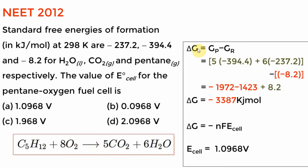Now ΔG° = products minus reactants: 5 × ΔG°(CO₂) + 6 × ΔG°(H₂O) minus ΔG°(pentane). Oxygen is in standard state so it is 0. When you do the sum you get a negative ΔG value in kilojoules. Then using ΔG = −nFE° with n = 32 you can solve for E°.